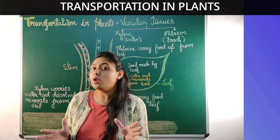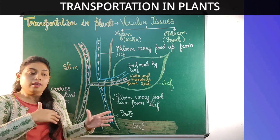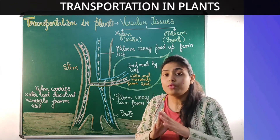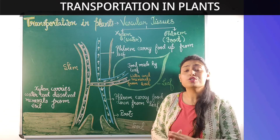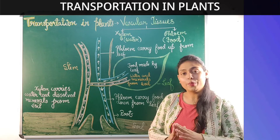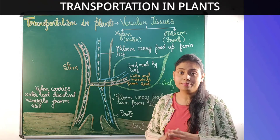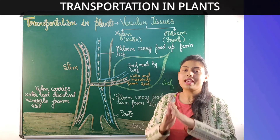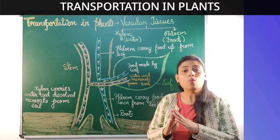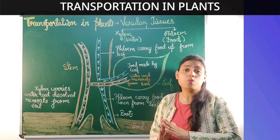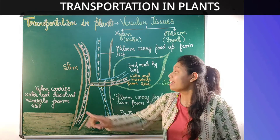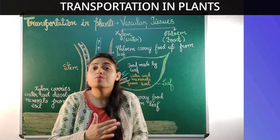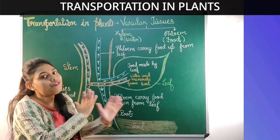We know that soil also contains different minerals, which are very important for the growth of plants. So when the roots absorb water from the soil, they also absorb minerals. Roots absorb water from the soil, and xylem carries that water along with dissolved minerals from the roots to different parts of the plant body.